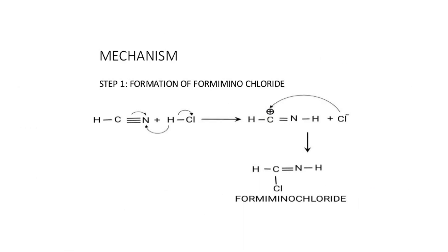Step 1 is the formation of formimino chloride. How does HCN react? The H-C≡N bond is considered, and the HCl bond breaks. The carbon becomes positively charged and the Cl minus attacks and attaches to it. So finally this compound is called formimino chloride.